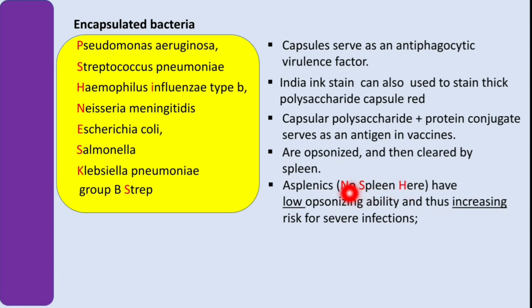Here's a mnemonic — 'No spleen here' — for the three bacteria we need vaccines against: Neisseria meningitidis, Streptococcus pneumoniae, and H. flu — Haemophilus influenzae type B.